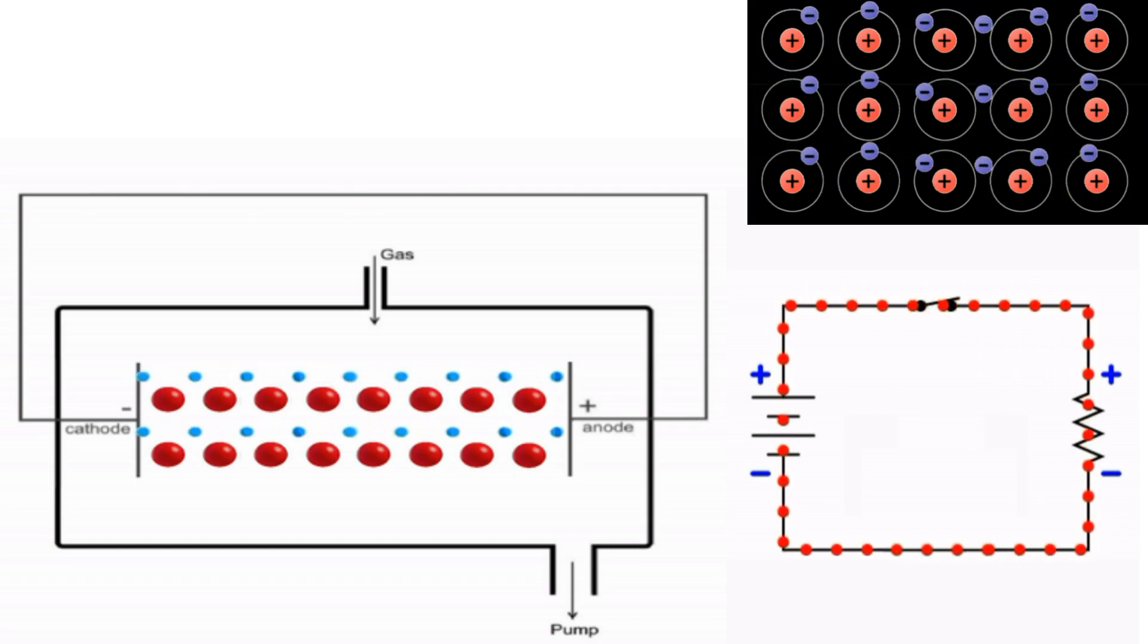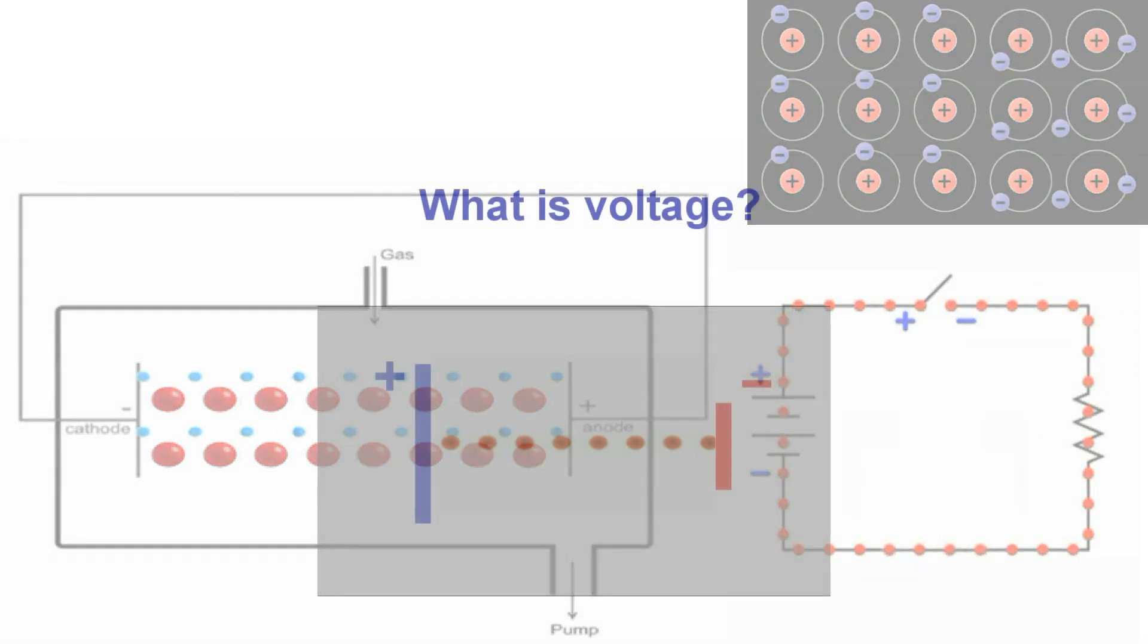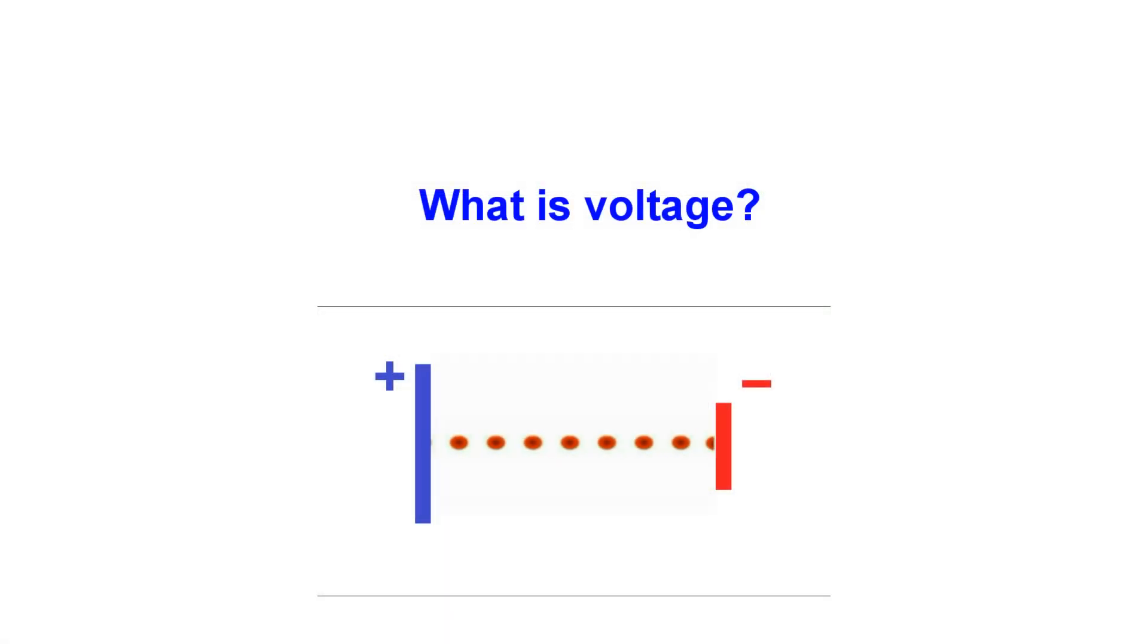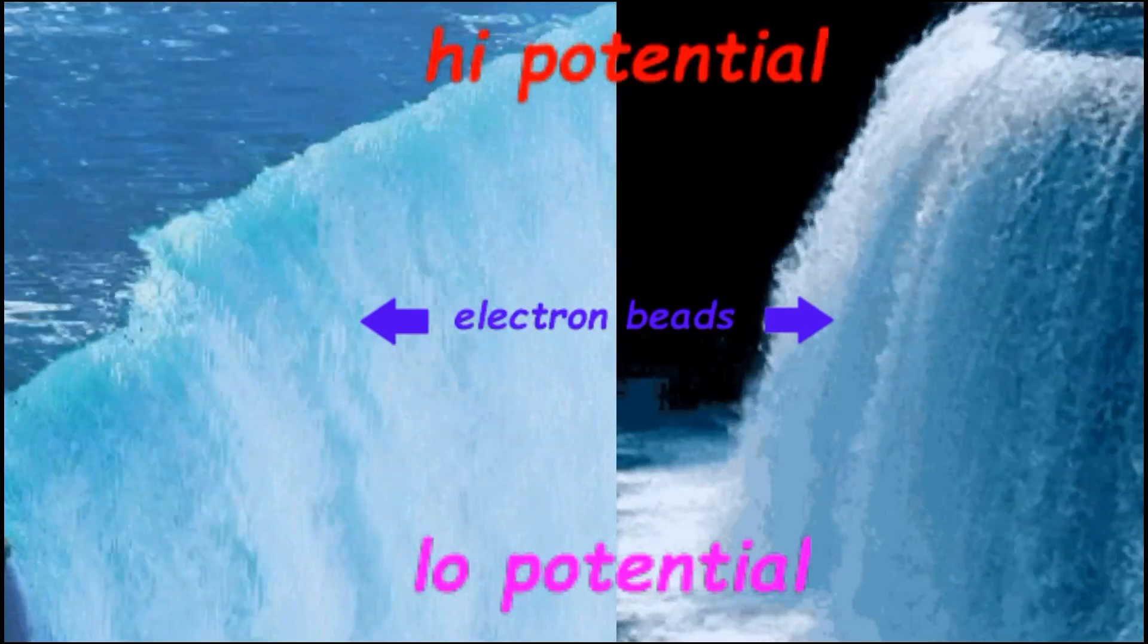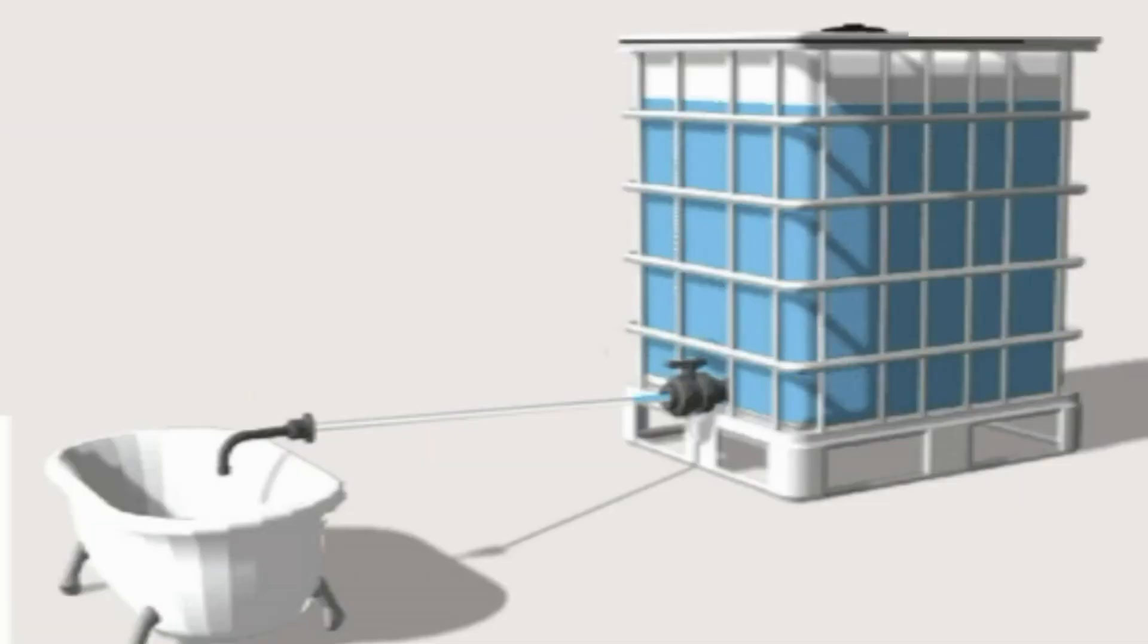What induces this flow is said to be a difference in potential known as voltage, widely simulated as water running down a hill. Think of a tank of water perched up high, connected to a pipe that ends down below in a container. It is self-evident that water will flow from the tank to the container, but this is quite misleading.